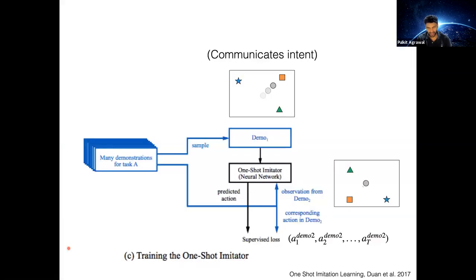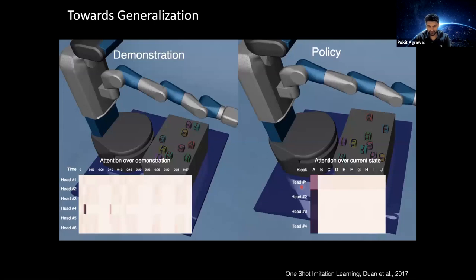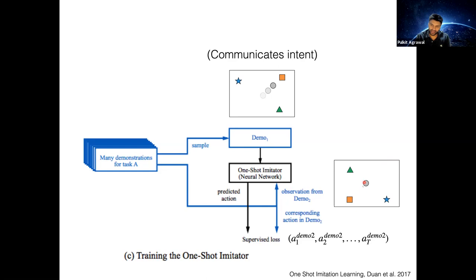Even though block locations are different, you are still able to stack blocks in the same way. A question: how do we ensure intent is communicated correctly? What if the agent gets the impression that moving to the top right is the task? At training time, for the second environment we have ground-truth actions. If the agent were to move to the top right, those actions would not match the demo-two actions, producing a high loss — forcing the agent to take actions that move towards the orange block.